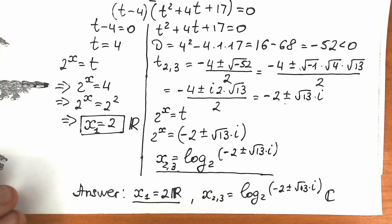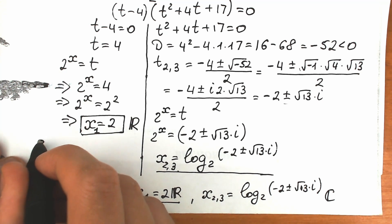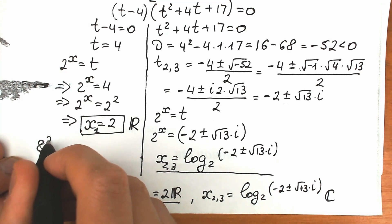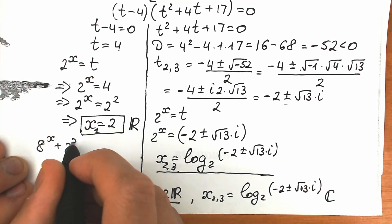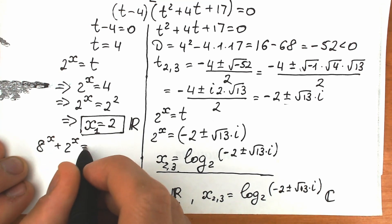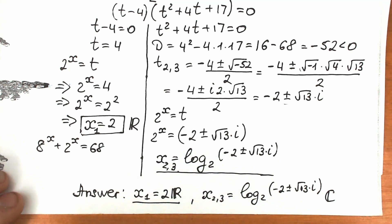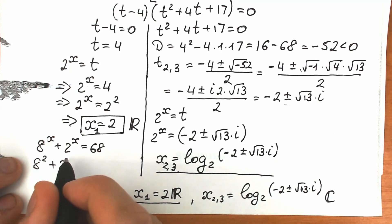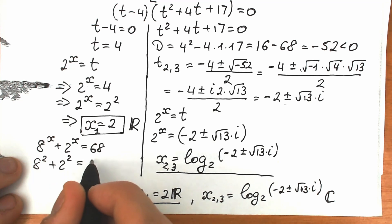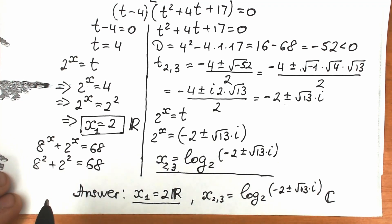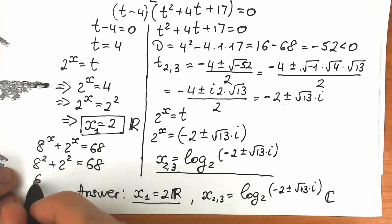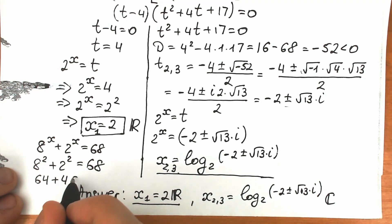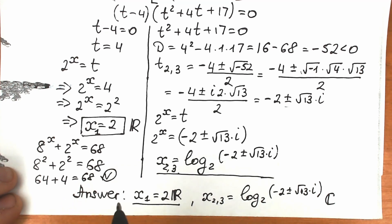Let's verify quickly. Our original equation is 8 to the x plus 2 to the x equals 68. With x equals 2: 8 squared plus 2 squared equals 64 plus 4 equals 68. This is absolutely correct — a great solution!